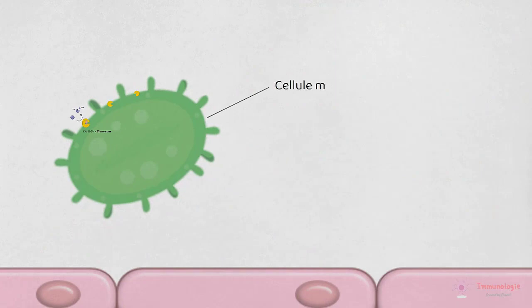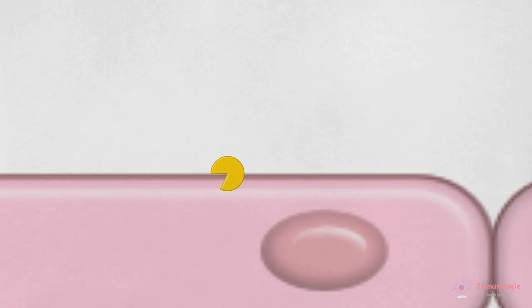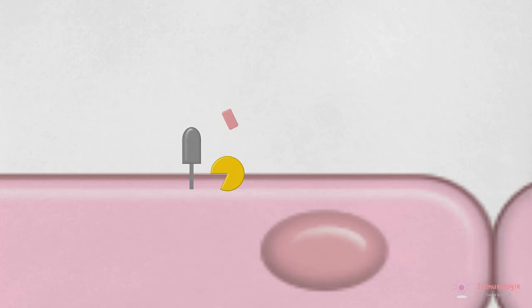L'activation de la voie alterne se produit facilement sur les surfaces des cellules microbiennes, mais pas sur les cellules de mammifères. Si la convertase C3b-Bb se forme sur les cellules de mammifères, elle est rapidement dégradée par l'action de plusieurs protéines régulatrices présentes sur ces cellules. Donc, c'est l'absence de ces protéines régulatrices sur les cellules microbiennes qui permet l'activation de la voie alterne du complément.